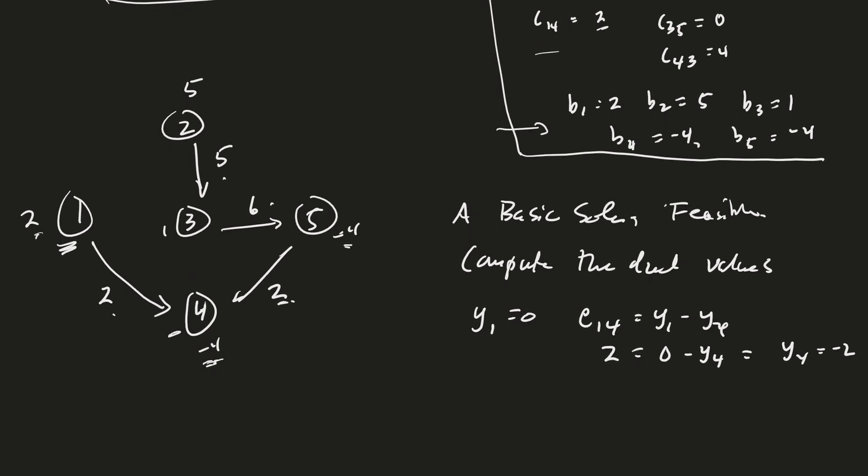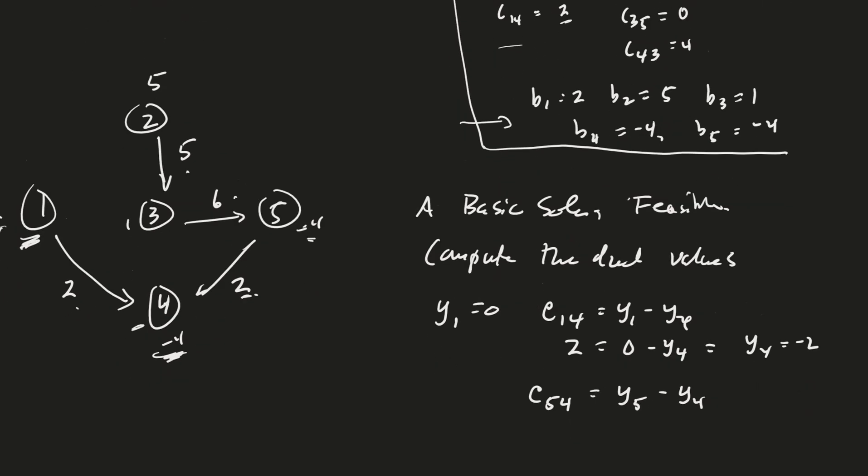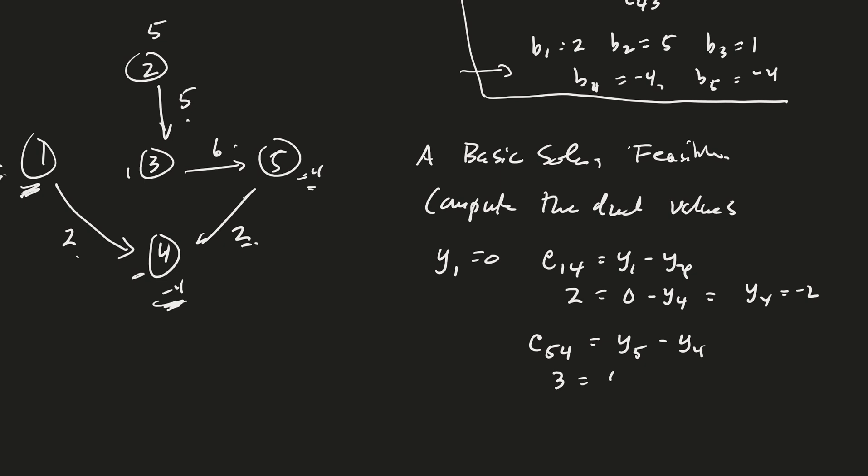Good. And so that gets both of these nodes done. The next arc here is from 5 to 4. So c54 is equal to y5 minus y4, right? c54, the cost was 3. y5 is my unknown. And I computed y4 up here to be negative 2. So therefore, y5 must be 3 minus 2 is 1.